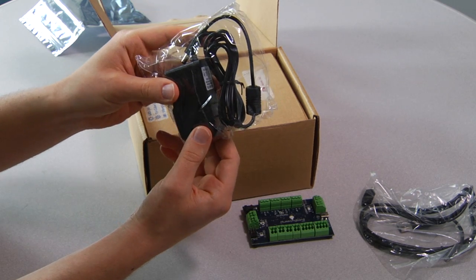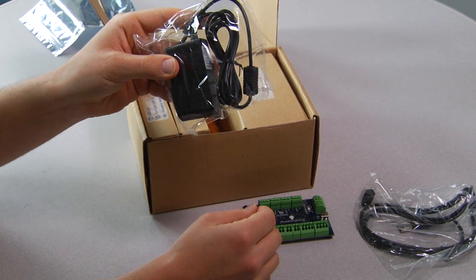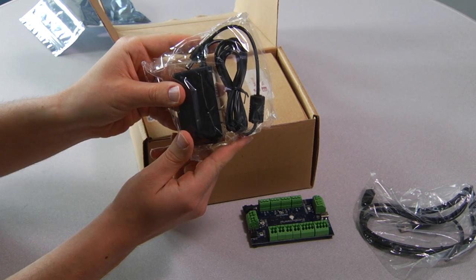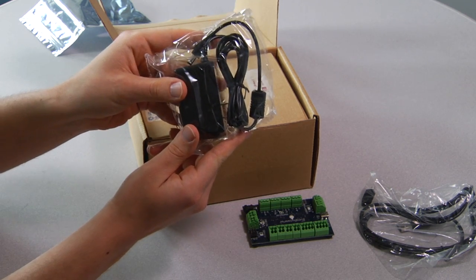This is the power adapter. Now Hummingbird is actually powered over USB, but this is supplementary power in case you want to run DC motors or servos.